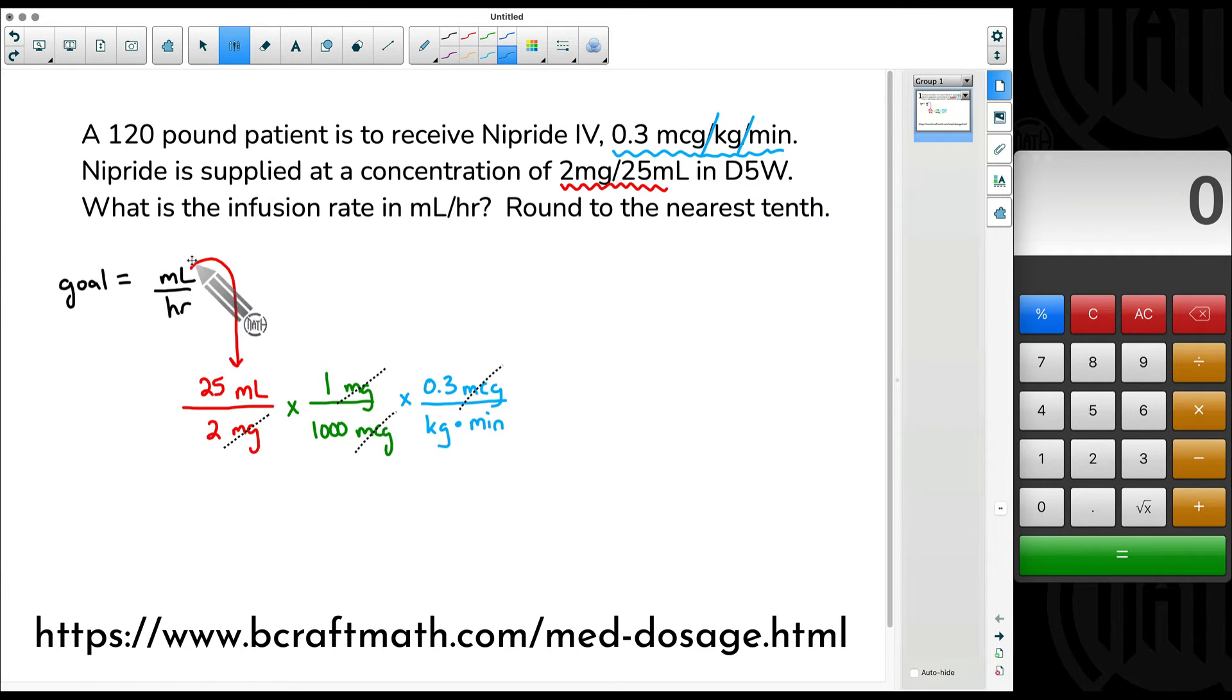So back to our goal, we want milliliters per hour. We're still not there yet. We need to get rid of kilograms and we need to get rid of minutes because our goal is milliliters per hour. Which one do you get rid of first? It does not matter. I'm going to get rid of kilograms first. We could get rid of minutes first if we wanted to. So since kilograms is at the bottom, I'm going to put kilograms at the top.